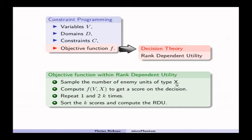Okay, so now I have a sample of my enemy units. So, I can compute my objective function f with my variables v, I know them, these are my variables, and with the sampled enemy units. So, I can compute my objective function, give me an output, which is actually a score on my decision.